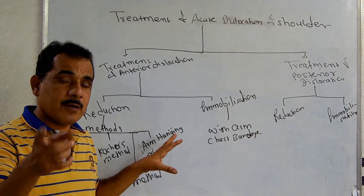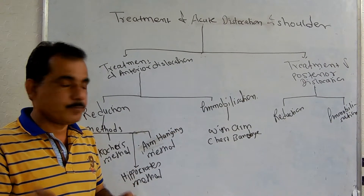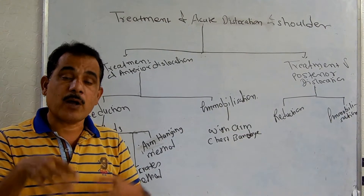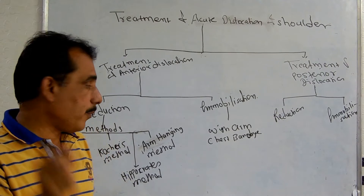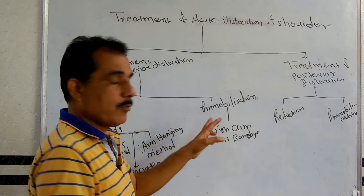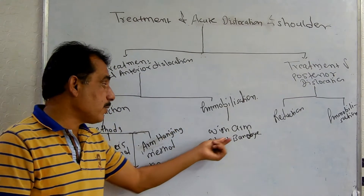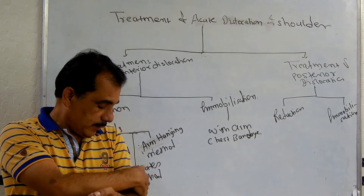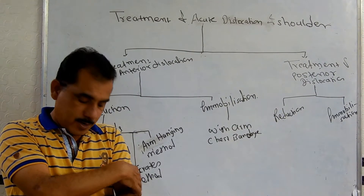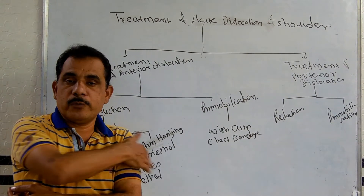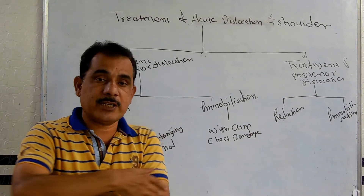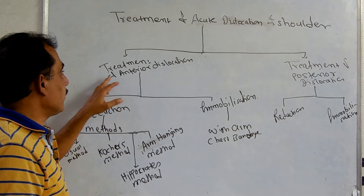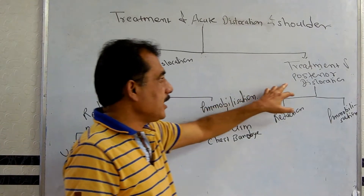All procedures should be carried out under anesthesia, which prevents pain to the patient and causes muscle relaxation, allowing proper reduction of the dislocation. After reduction, immobilization is carried out with an arm-chest bandage. The elbow is flexed and the arm is brought in front of the chest at the midline, then wrapped around the chest with a bandage — this is the arm-chest bandage.